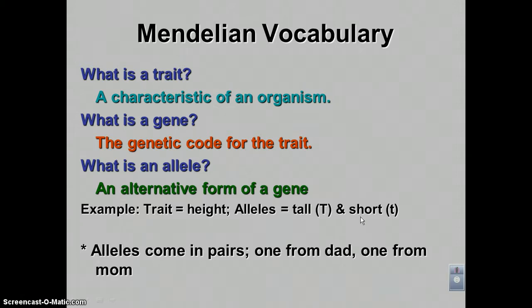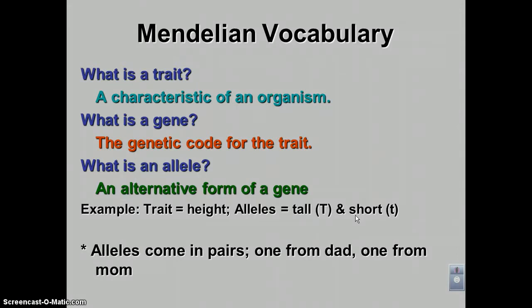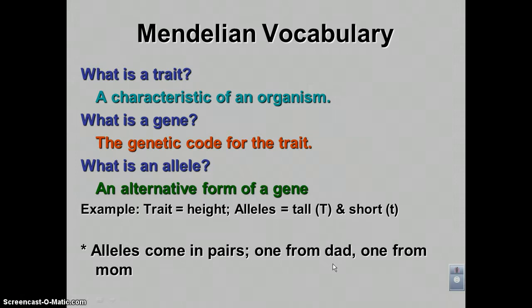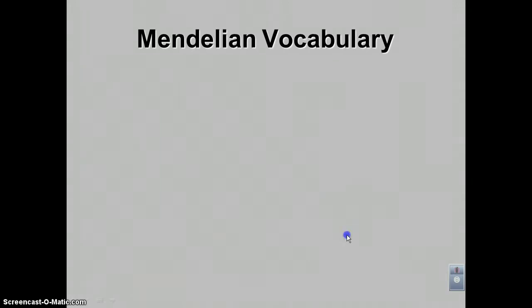Because peas, like humans, are created through sexual reproduction, alleles come in pairs. You get one allele from dad and one from mom. So alleles always come in pairs — one maternal allele and one paternal allele.